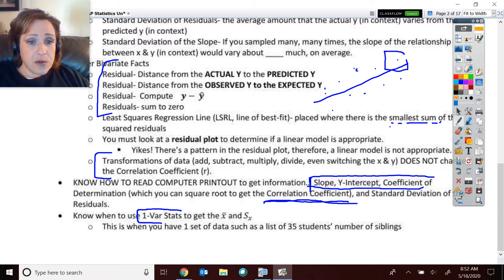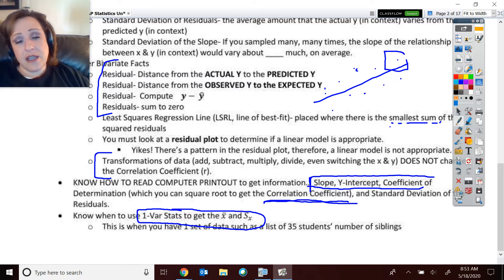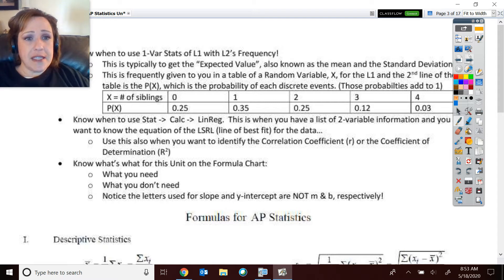Now, when I was helping my son with some of his review, he was confused on when you're using one variable stats, when you're using one variable stats of L1 with L2's frequency, that kind of stuff. So I wrote this up here. If you're doing just one variable stats, let's say you just have one list of heights, then you would just do one variable stats. And it would give of that list of, oh, this is the 35 students' number of siblings. So just one set of data, you just do one variable stats. But suppose, what if we want to say, we want to get the expected value. Well, we know expected value is the mean.